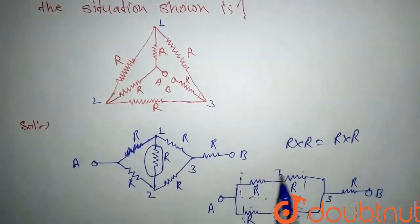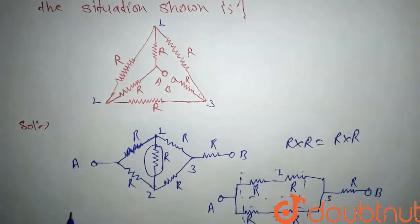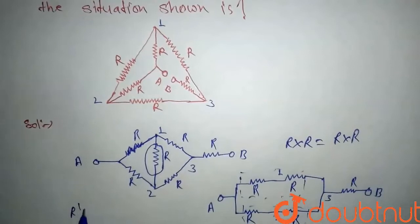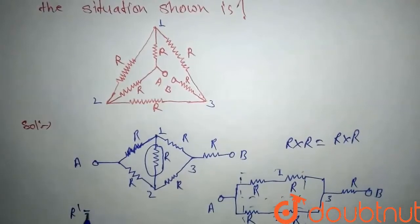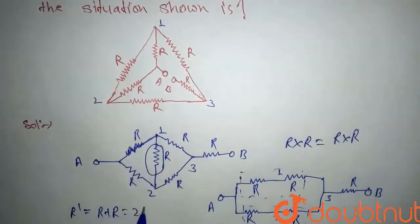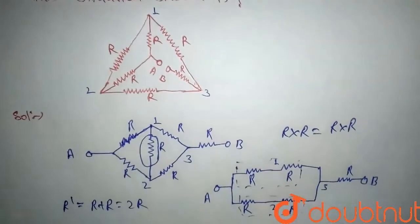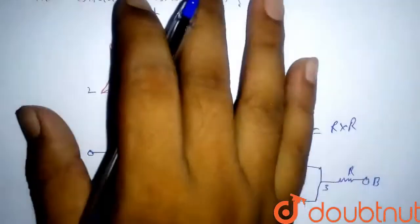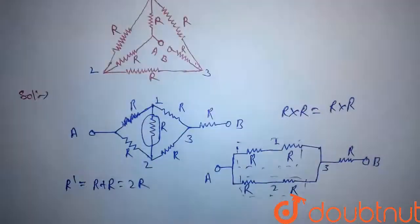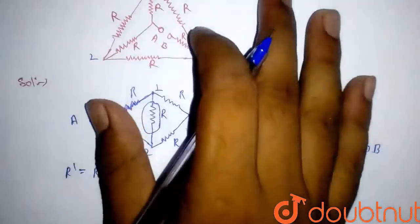We can see that the two top resistors are connected in parallel, and the two bottom resistors are also connected in parallel. Taking each parallel pair: within each path the resistors are in series, so the series combination gives R plus R equals 2R.